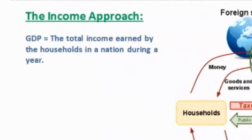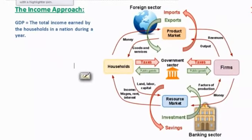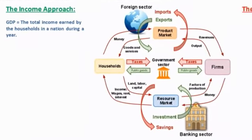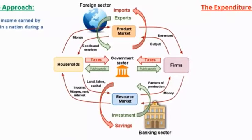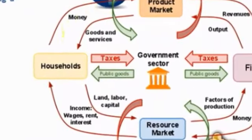One way to measure GDP is by using the income approach. The income approach measures the total income earned by households in a nation during a year. Let's look at our graph and decide where the income in the circular flow is shown. Any circular flow model includes two markets: households and firms. Households are the providers of resources to firms who demand resources in order to produce goods and services. As we see in our circular flow here, households provide land, labor, and capital to firms in the resource market.